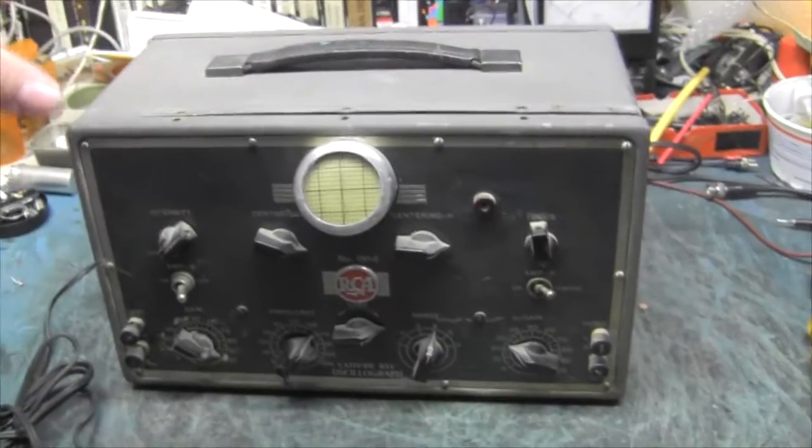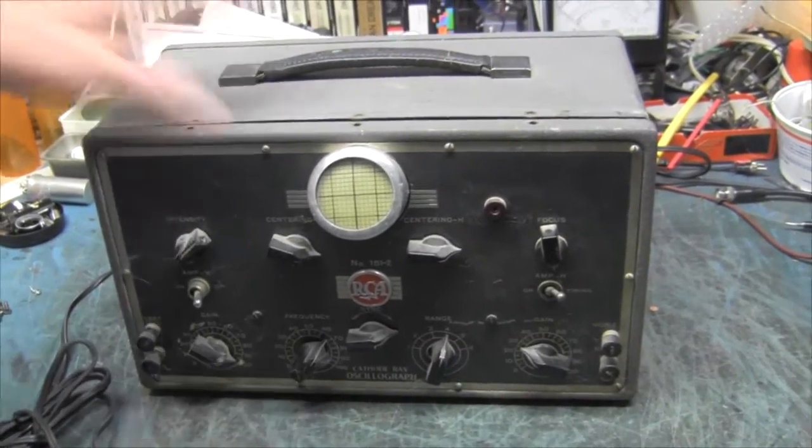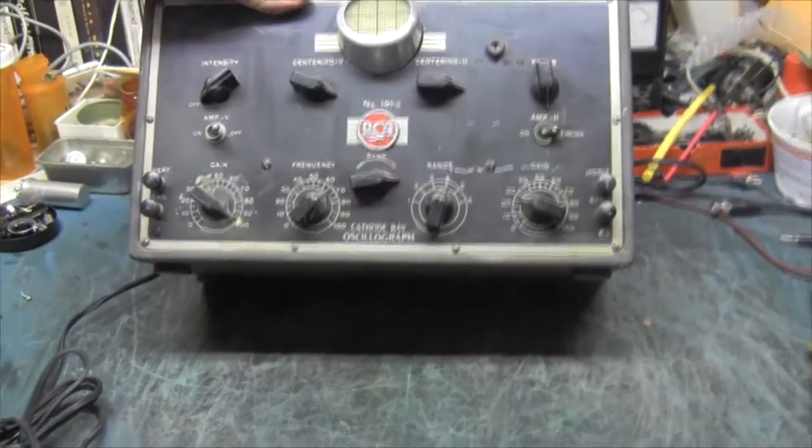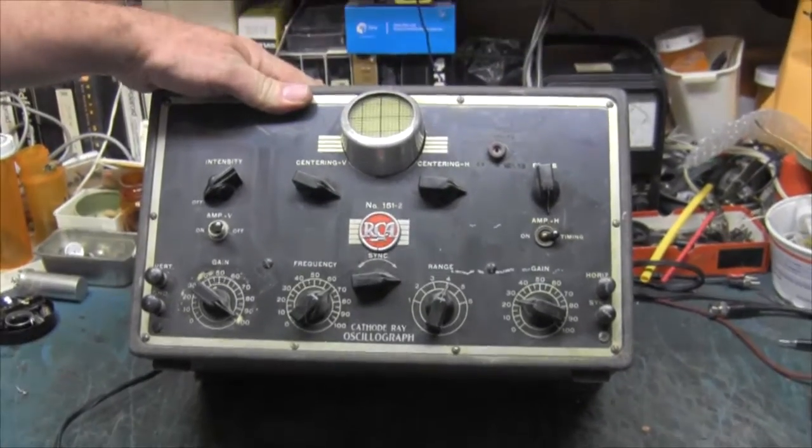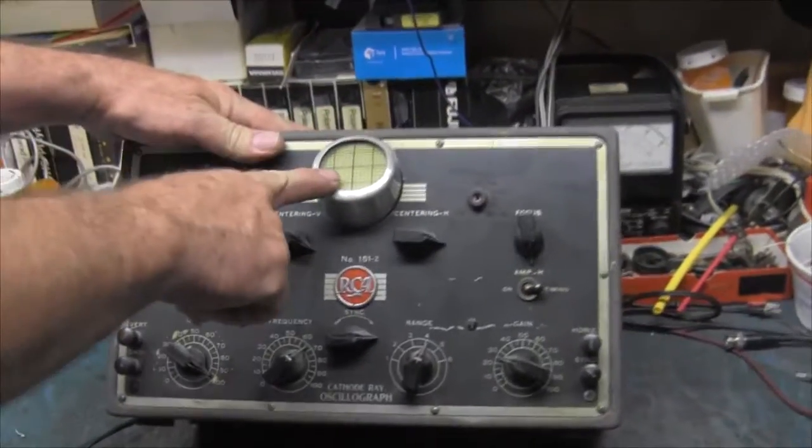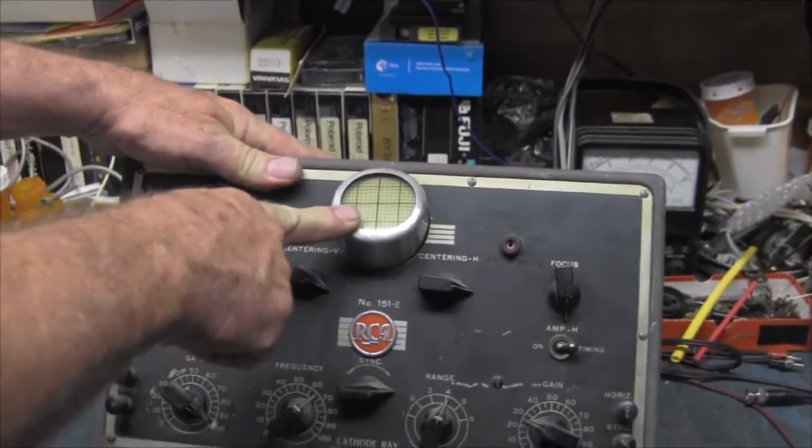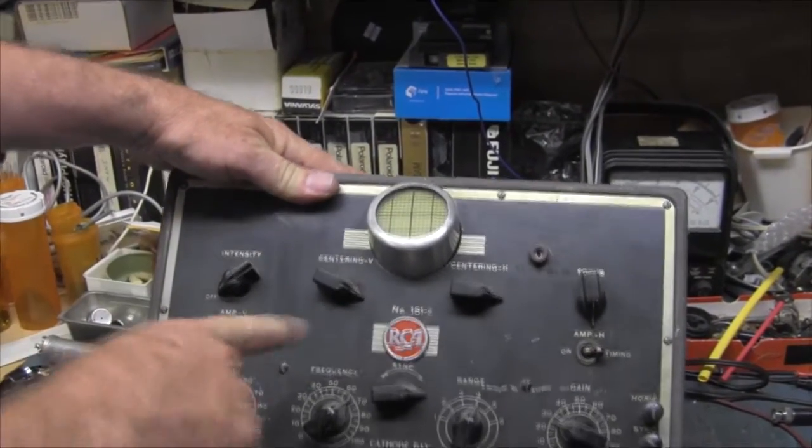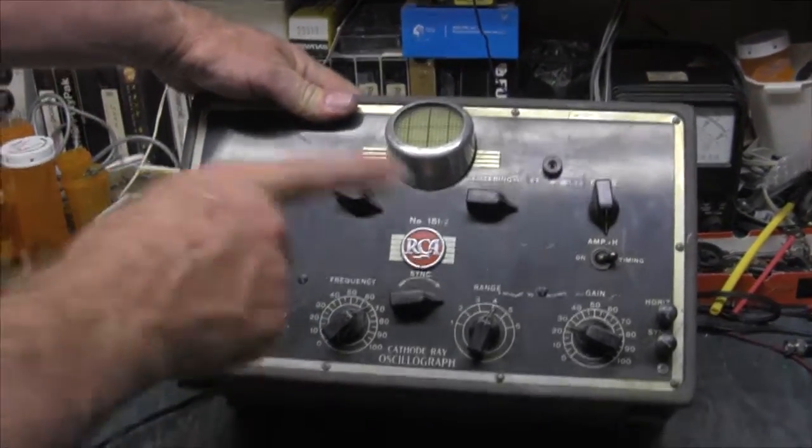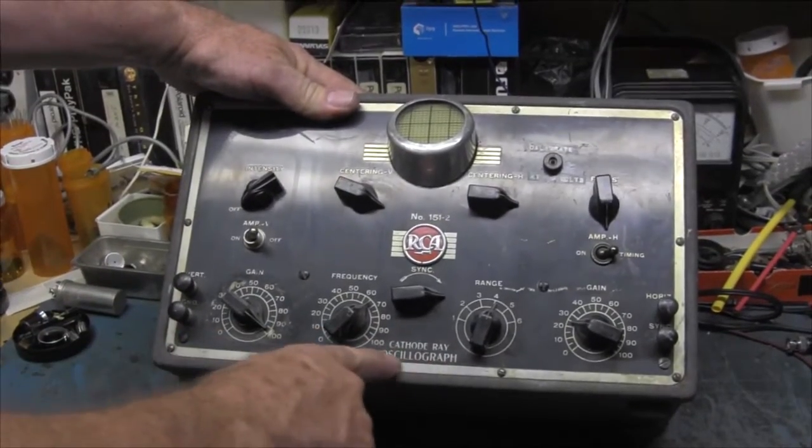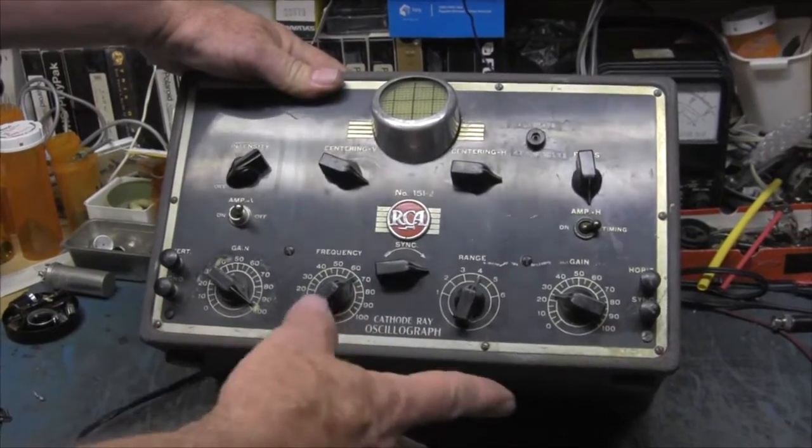This is a really neat antique from the early days of electronics. This was made by RCA back in the 30s when they were working on television. They had invented the electron tube for scopes and scientific purposes and they were using it in television. But this was an RCA, RCA Victor of course, cathode ray oscillograph which is a crude scope.